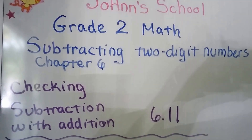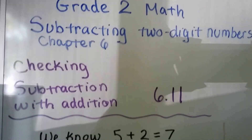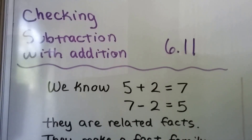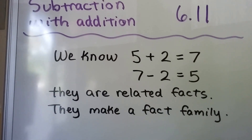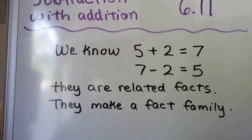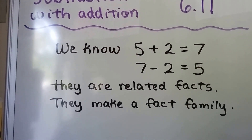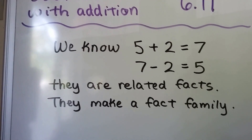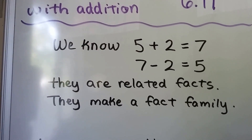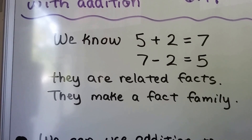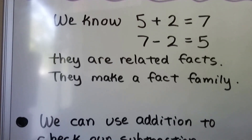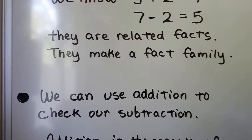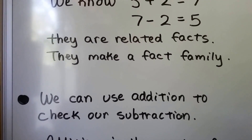Checking subtraction with addition. We know 5 plus 2 equals 7, and 7 minus 2 equals 5. They're related facts — they make a fact family. We can use addition to check our subtraction.